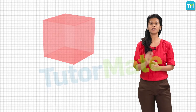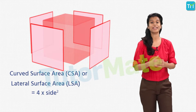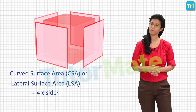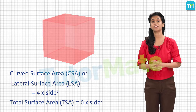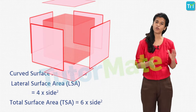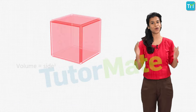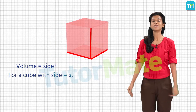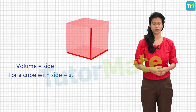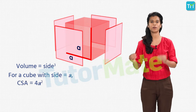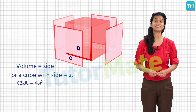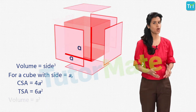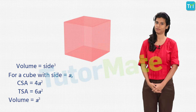For a cube, we have the curved surface area or the lateral surface area as 4 times the square of the side. The total surface area of the cube is given as 6 times the square of its side, and finally the volume of a cube is equal to the cube of its side. So if a cube has side 'a', its CSA will be 4a², its TSA will be 6a², and its volume will be a³.